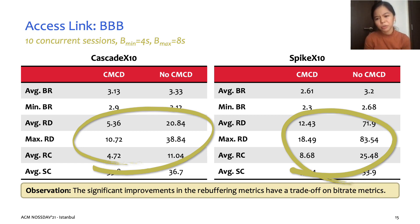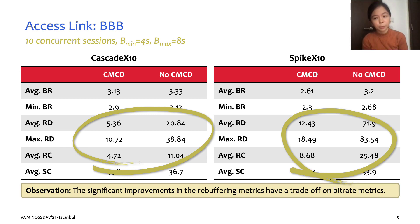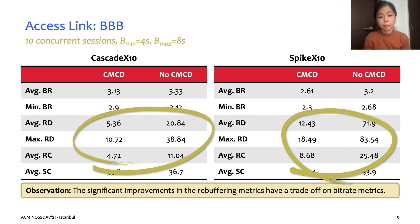For instance, when we reduce the download speed during throttling at the server, this could have led to more conservative bit rate decisions at the client. We also note that the percentage improvement in rebuffering metrics far exceeds the percentage dips in the bit rate metrics, so we think the trade-off might be acceptable in this particular test case.